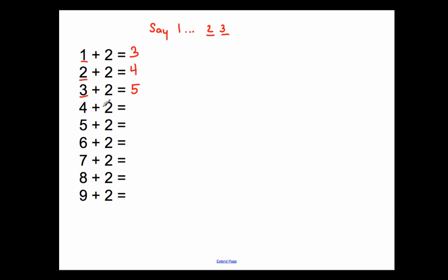So 4, 5, 6. 5, 6, 7. So 5 plus 2 equals 7. 6, 7, 8. 6 plus 2 equals 8. 7, 8, 9. 7 plus 2 equals 9. 8, 9, 10. 8 plus 2 equals 10. 9, 10, 11. 9 plus 2 equals 11.